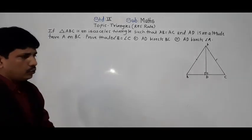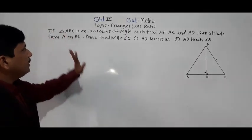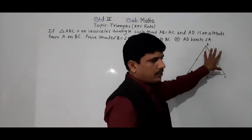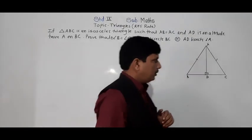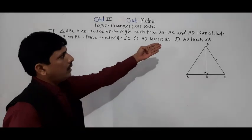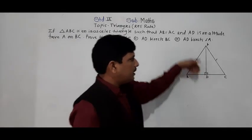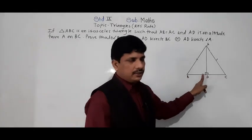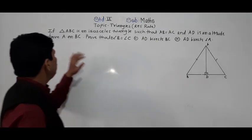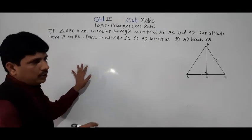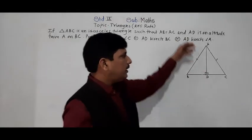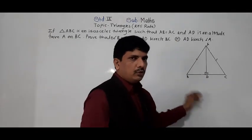A figure is also given. Triangle ABC is an isosceles triangle with AB equal to AC, as we can see from the figure. AD is an altitude — it is perpendicular to the base BC. It is an altitude from A on BC; that AD bisects BC is not given, that we have to prove. But AD is perpendicular to BC.